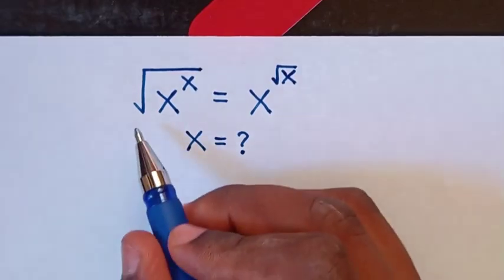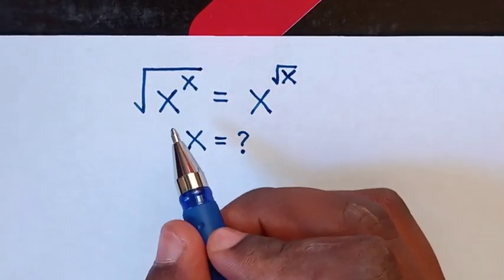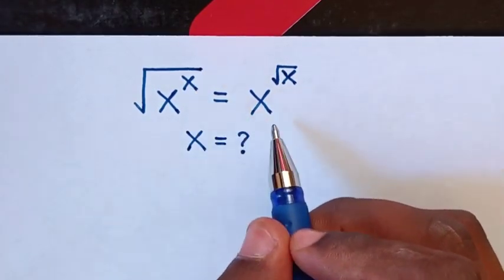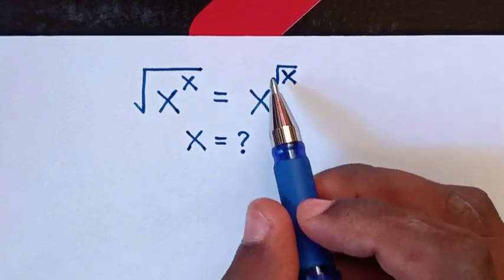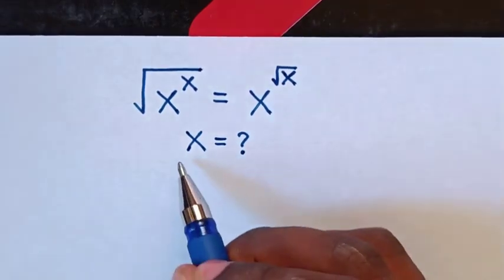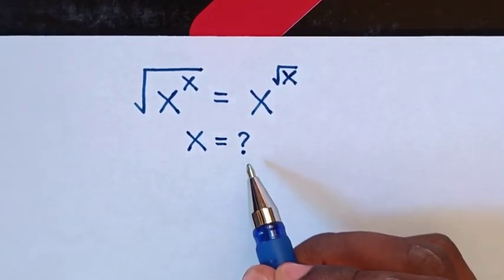Hello, how to solve square root of x power x is equal to x power square root of x, to find the value of x.